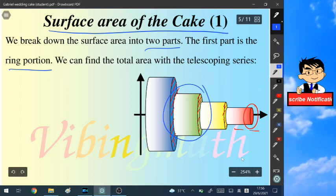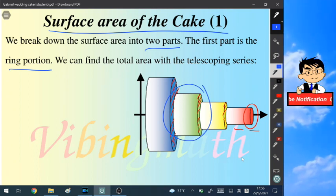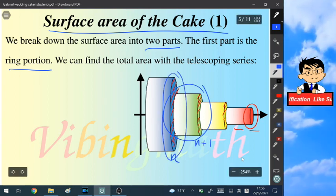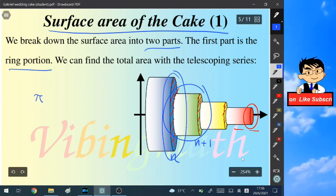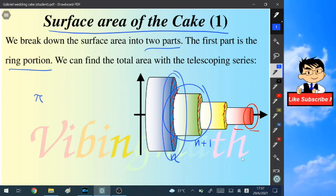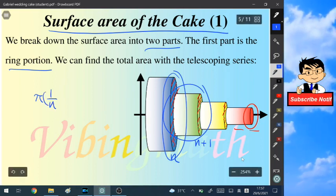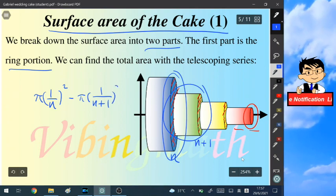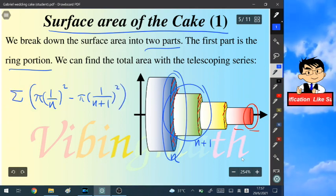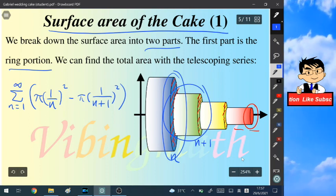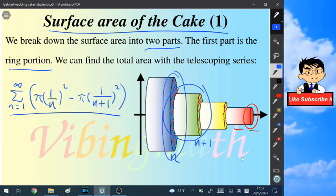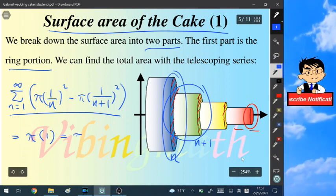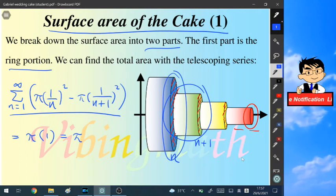We are focusing on one portion of the cake which starts from n to n+1. So we know that this ring has the area of π r², for r equal to (1/n)², minus π times the smaller radius (1/(n+1))². We are taking the summation from n=1 to infinity. And this summation is a telescoping series, and it's exactly equal to π times 1. So the area of the ring part is equal to π.